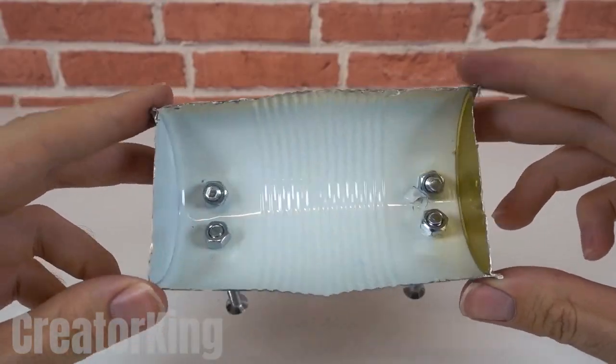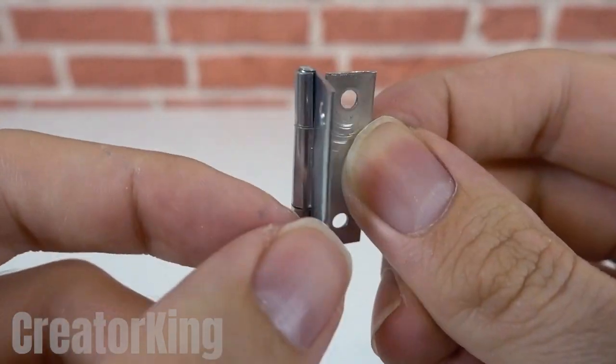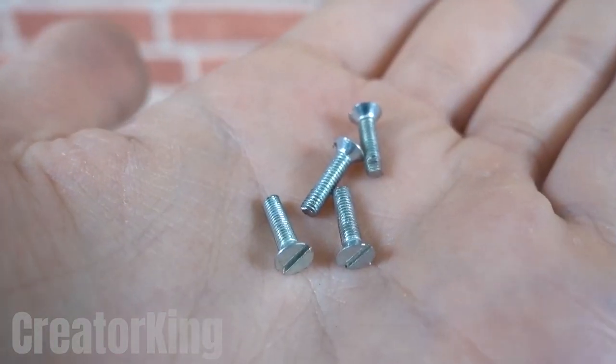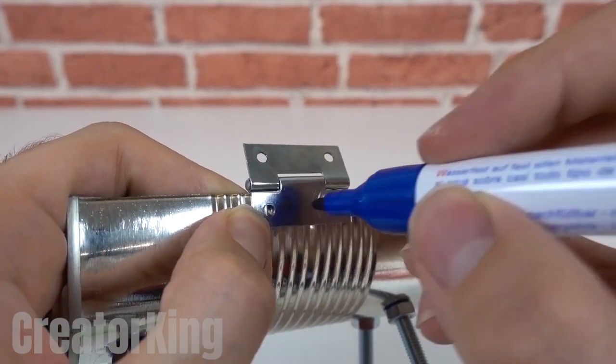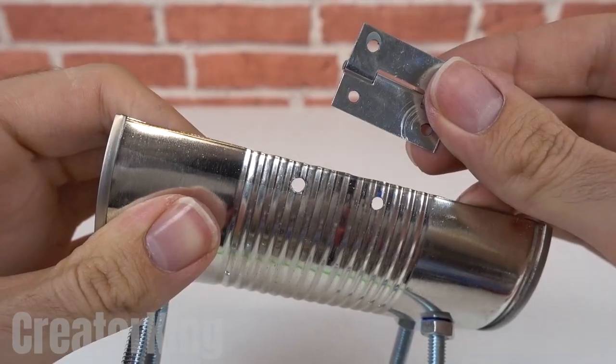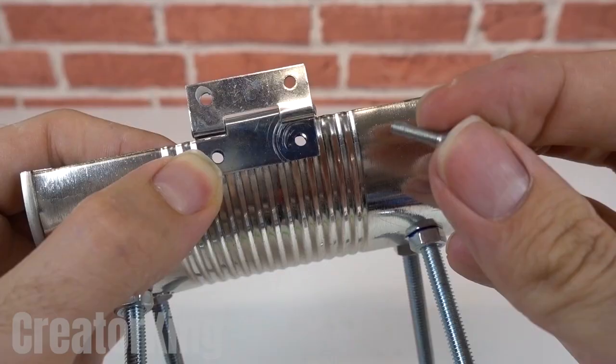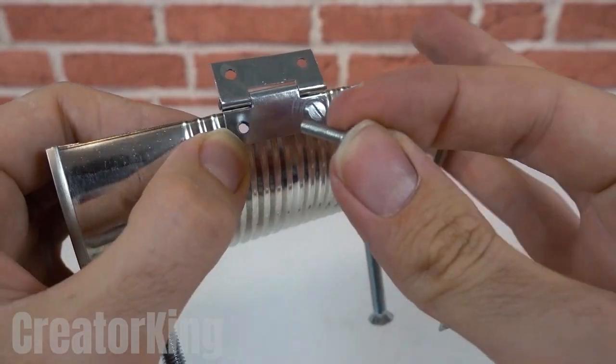You'll need to find a hinge at a hardware store or take it off your door. Also get some small screws. Mark where the hinge holes are on the can and pierce them. Place the hinge and fasten it by pressing the screws through the holes we've created. Everything is taking shape. There are only a few steps left before we can have a tremendous feast.